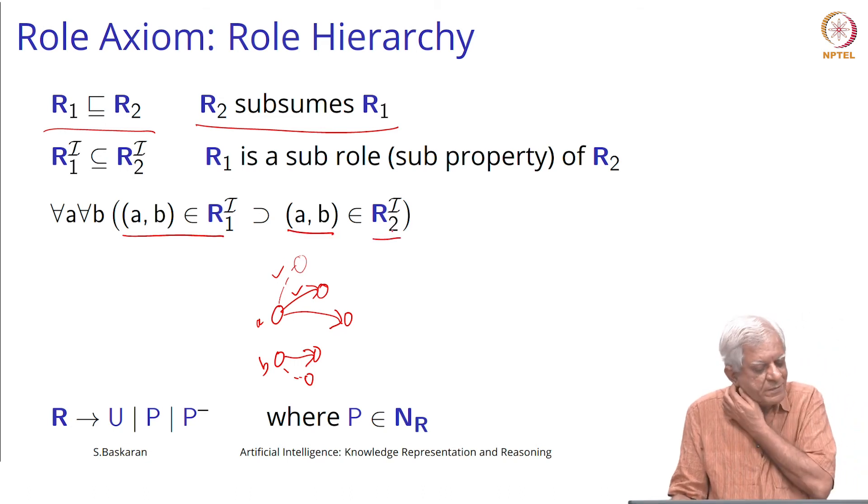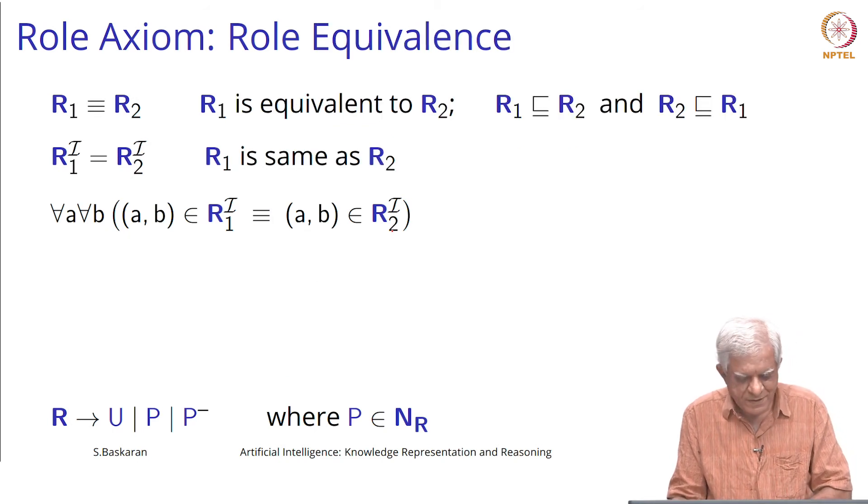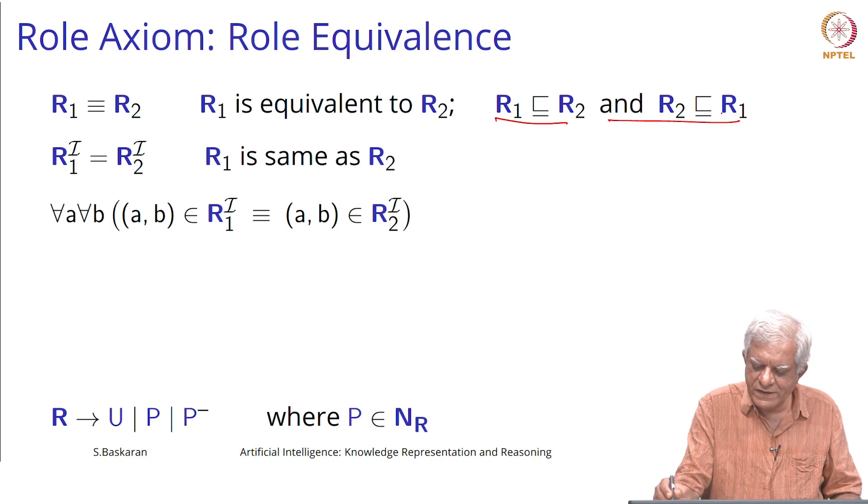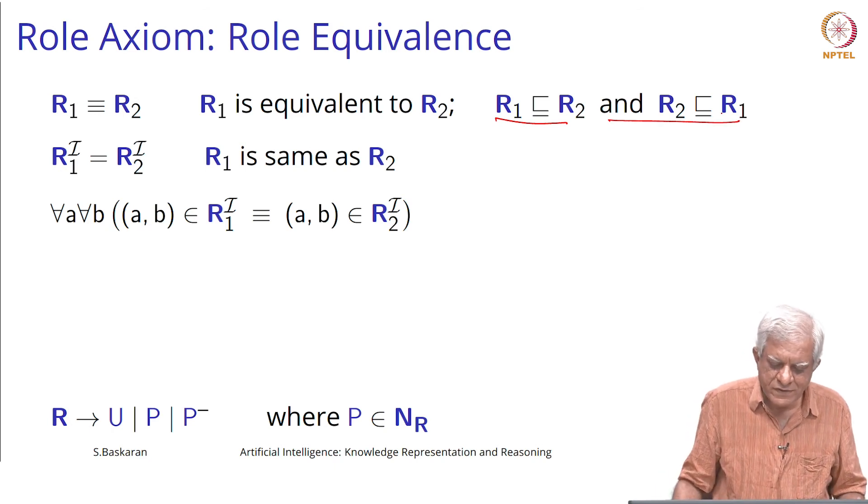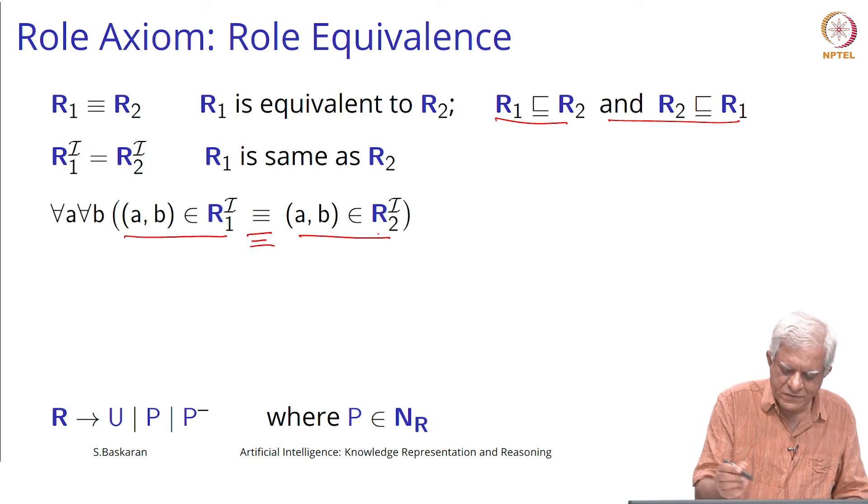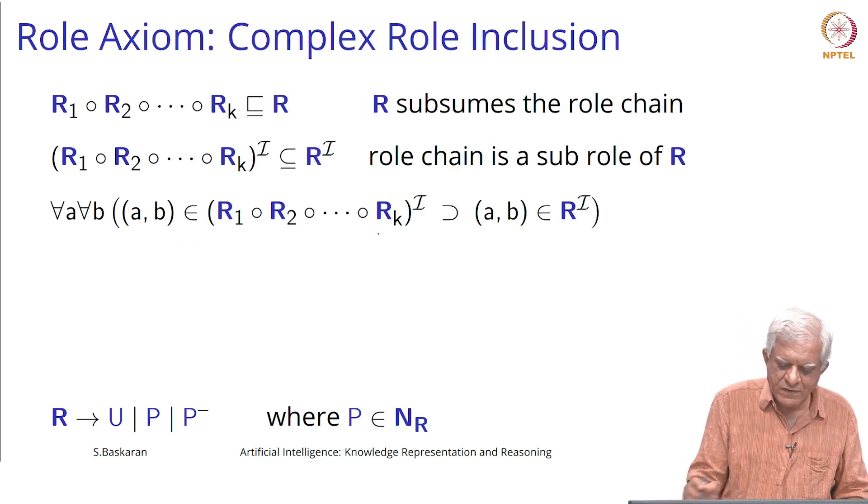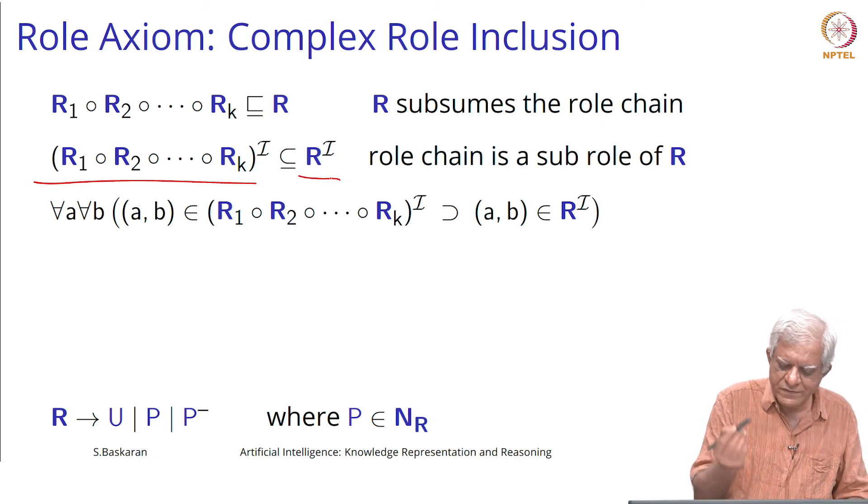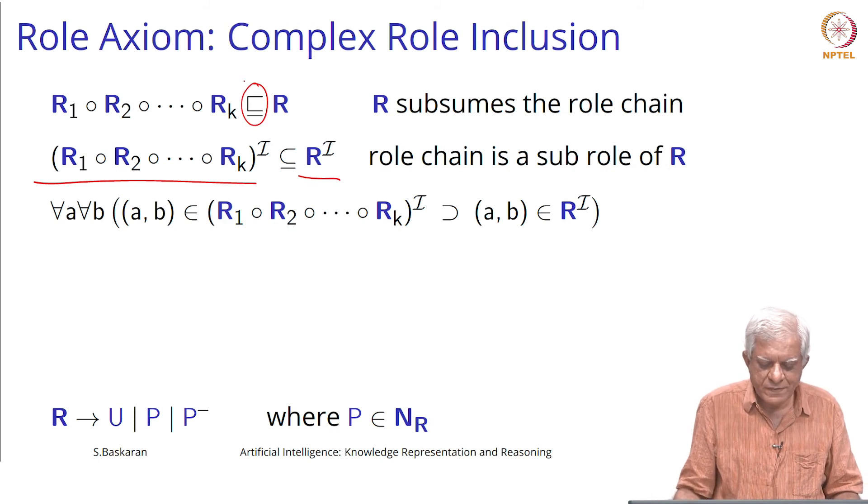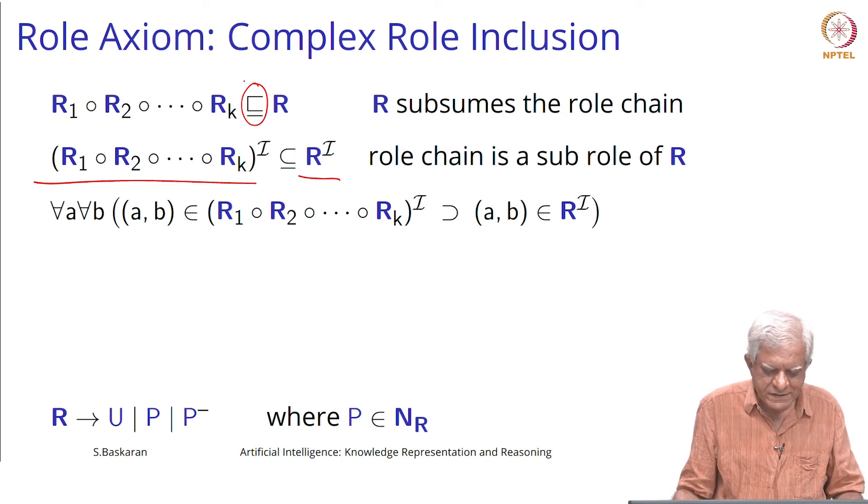If A is the brother of B or B is the brother of A, then B is the sibling of A. The equivalence thing is basically a two way thing. It is another synonym for the same relation name. If (a,b) belongs to R1, then it is equivalent to saying that (a,b) belongs to R2. We can say that a role chain is a sub role of R, which is here. R could be another relation that we have defined.